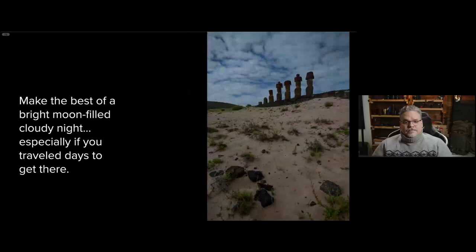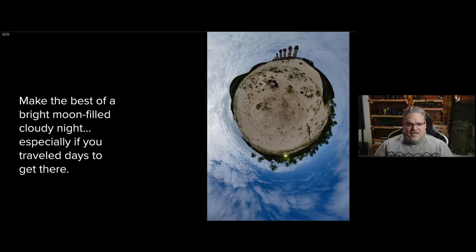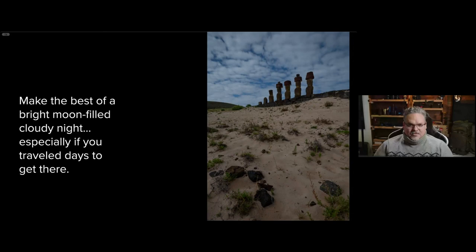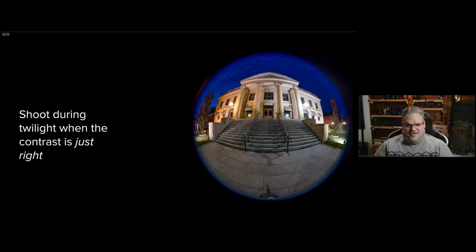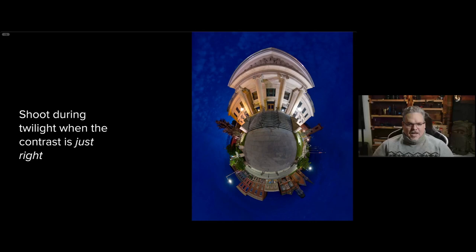Cloudy nights don't have to be a reason to pack up. When you travel thousands of miles to get someplace, make the best of it — make those clouds work for you, especially if there's detail in them. That's what happened in Rapa Nui — Easter Island — you make pictures no matter what. Twilight is your best friend. I made these images at the courthouse in Catskill Village where the sky was darker than the foreground — a deliberate tactic that turned into instant drama.